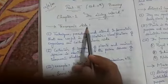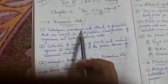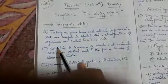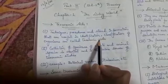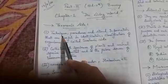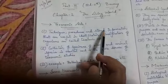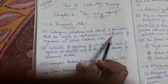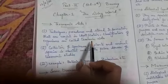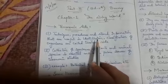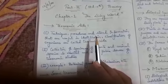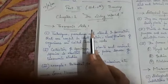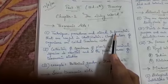Now we will move to what taxonomic aids is. Taxonomic aids are techniques, procedures, and stored information that are used in identification and classification of organisms. If you want to classify or identify certain specimens, you can identify them with the help of taxonomic aids — that is, stored information.